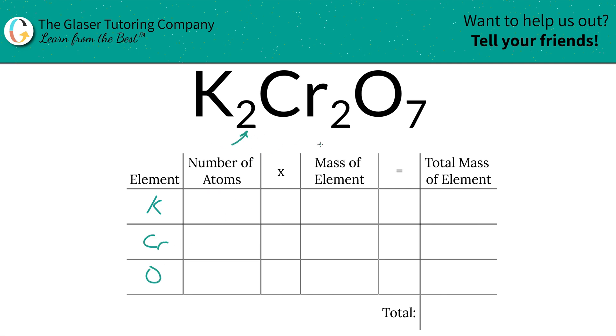Next is to write down the number of atoms, and that's where the subscripts come into play. So we have two atoms of potassium, two atoms of chromium, and seven atoms of oxygen. Then we're going to take those number of atoms and multiply it by the mass of that particular element.